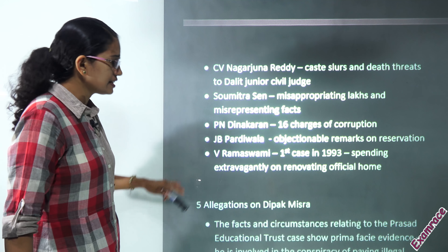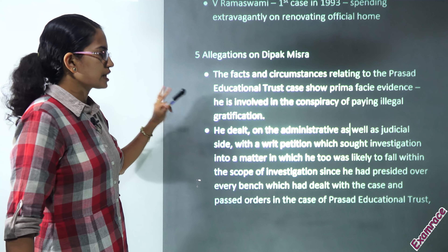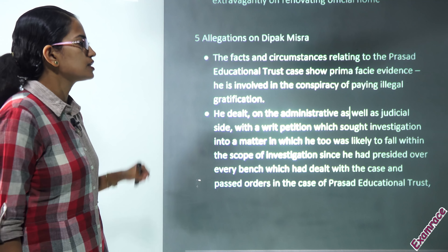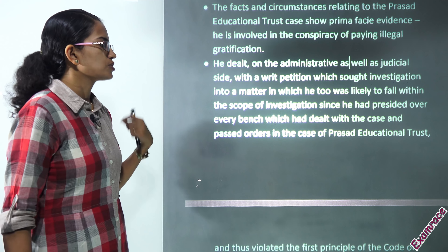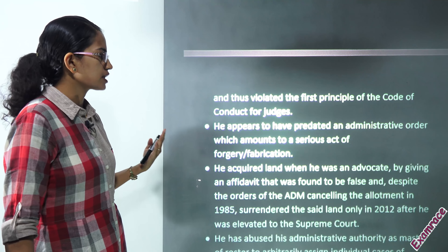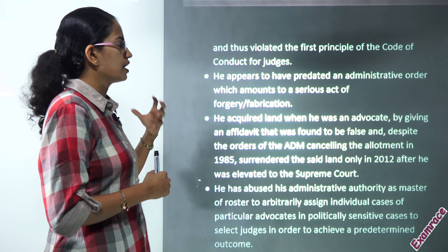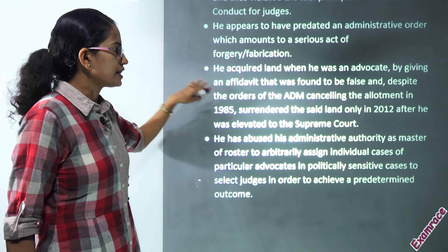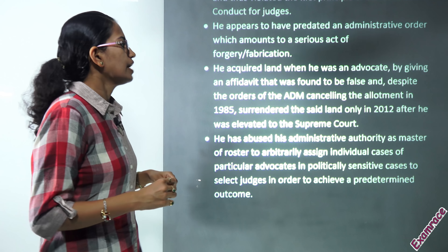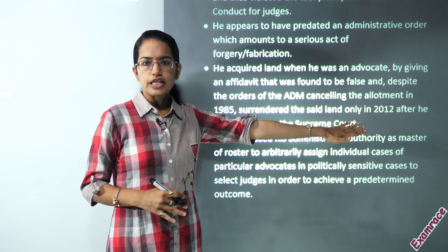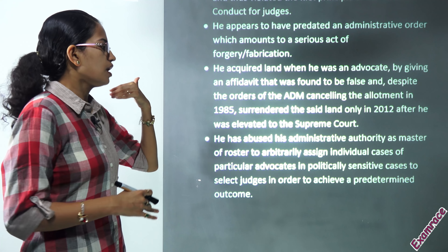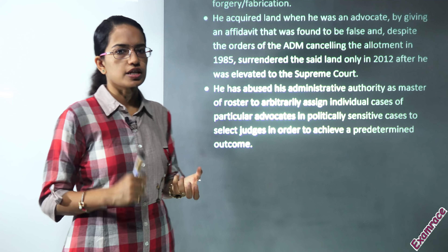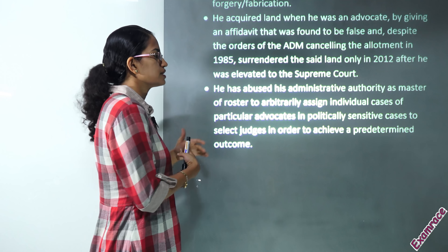For the case of Deepak Mishra, there were five charges. First, related to the Prasad Educational Trust. Second, related to a writ petition sought for litigation purposes under the Prasad Educational Trust. Third, alleged involvement in forgery or fabrication. Fourth, when he was an advocate, he acquired land, and those orders continued until he surrendered the land only in 2012 when he was elevated to the Supreme Court. Fifth, he abused his administrative authority.